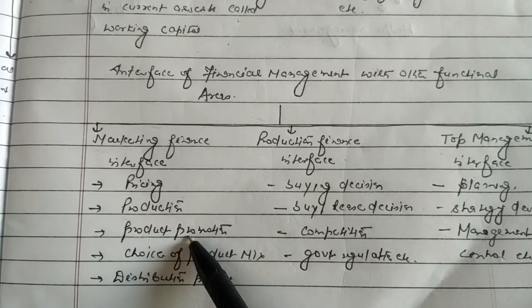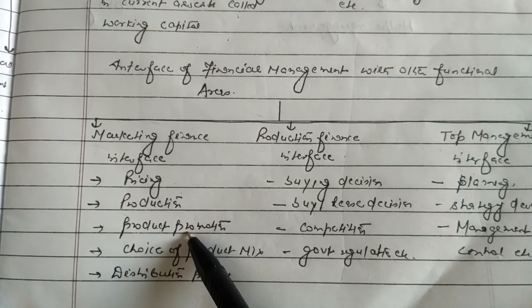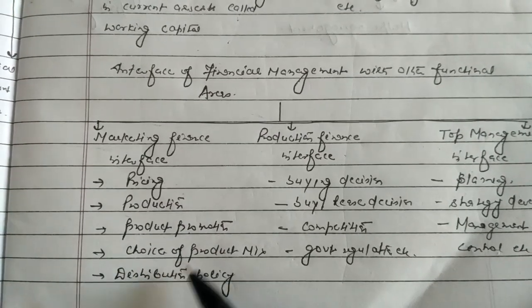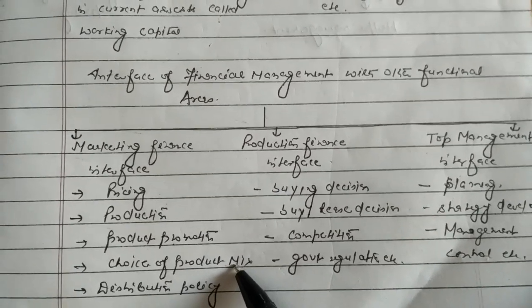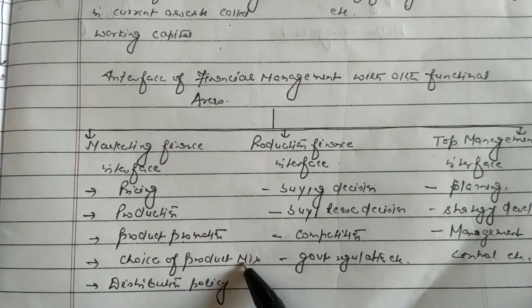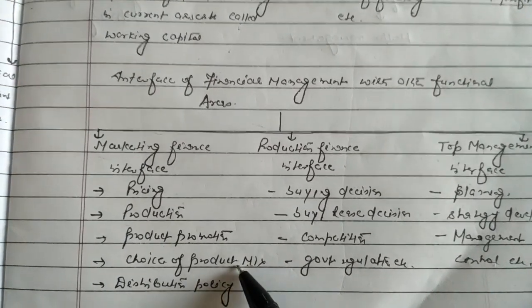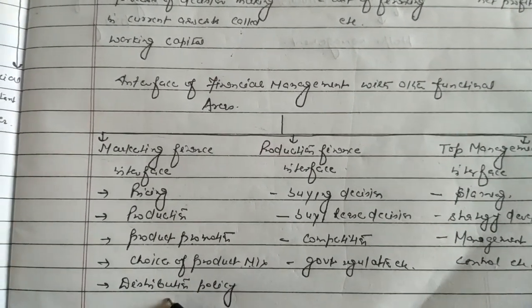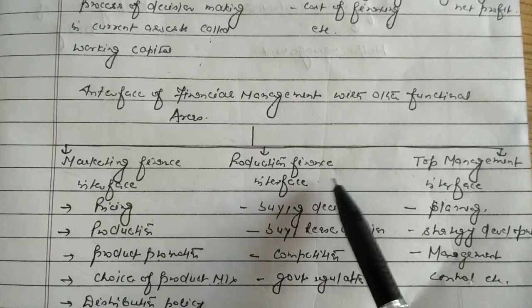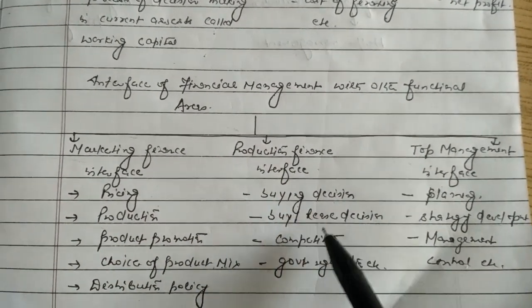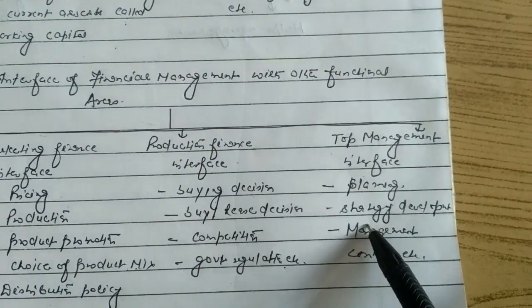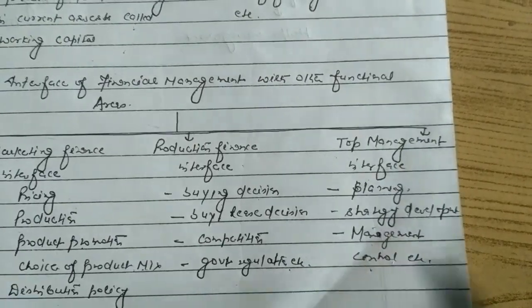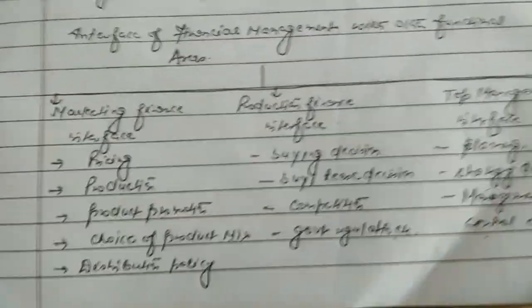In the Marketing-Finance interface, product promotion concerns how we promote the product in a cost-effective manner to provide more profit, and product mix includes all strategies which provide market segmentation or attract customers. In the Production-Finance interface there are buying or lease decisions, competition, and government regulations. Under the Top Management interface there is planning, strategy development, and management control.